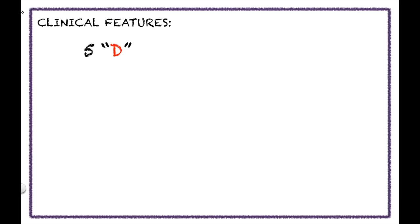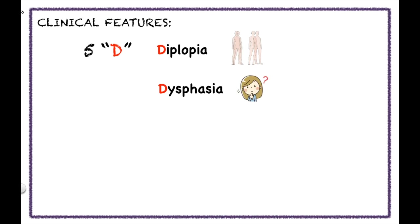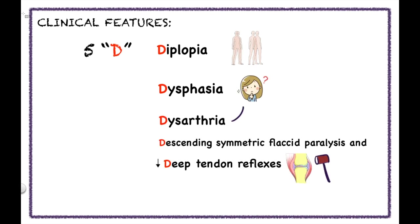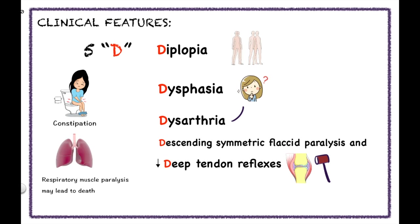Now, clinical features. You can remember the common symptoms with the simple mnemonic 5D, which represents: diplopia, dysphagia, dysarthria, descending symmetric flaccid paralysis, and decreased deep tendon reflexes. Other symptoms include constipation and respiratory muscle paralysis which may even lead to death. Importantly, there are no sensory or cognitive deficits.